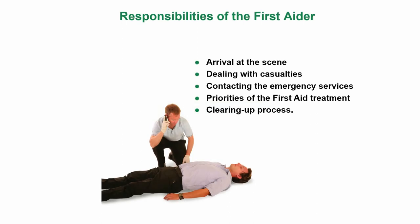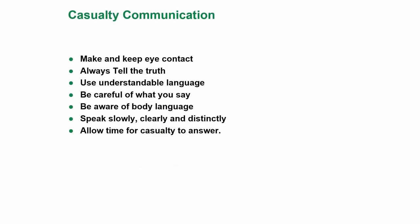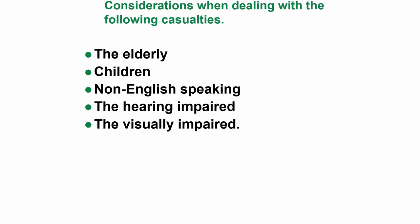Number four: responsibilities of the emergency first aider. These include arrival at the scene, dealing with casualties, contacting the emergency services, priorities of first aid treatment, and the clearing up process. With casualty communication: make and keep eye contact, always tell the truth, use understandable language, be careful of what you say, be aware of your body language, speak slowly, clearly and distinctly, and allow time for the casualty to answer. Considerations when dealing with the following casualties must be taken into account: the elderly, children, non-English speaking, hearing impaired, and visually impaired.